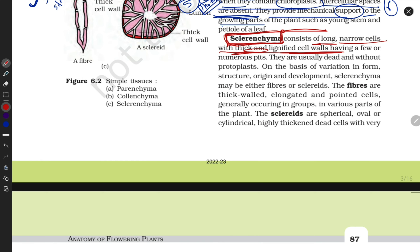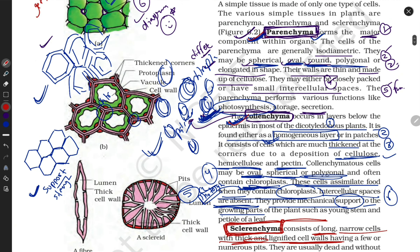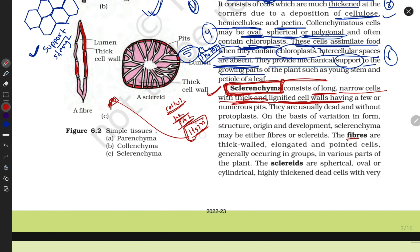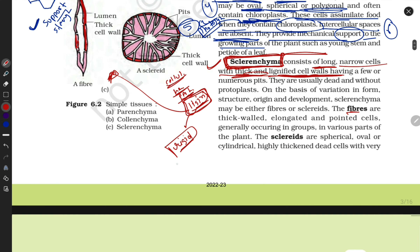Collenchyma and parenchyma share some overlapping functions, but sclerenchyma is totally different. Sclerenchyma cells are long, narrow, thick, and lignified. Lignin is a component — along with cellulose, hemicellulose, and pectin — that is always present in sclerenchyma. These cells are found in fibrous parts and provide rigidity and strength.